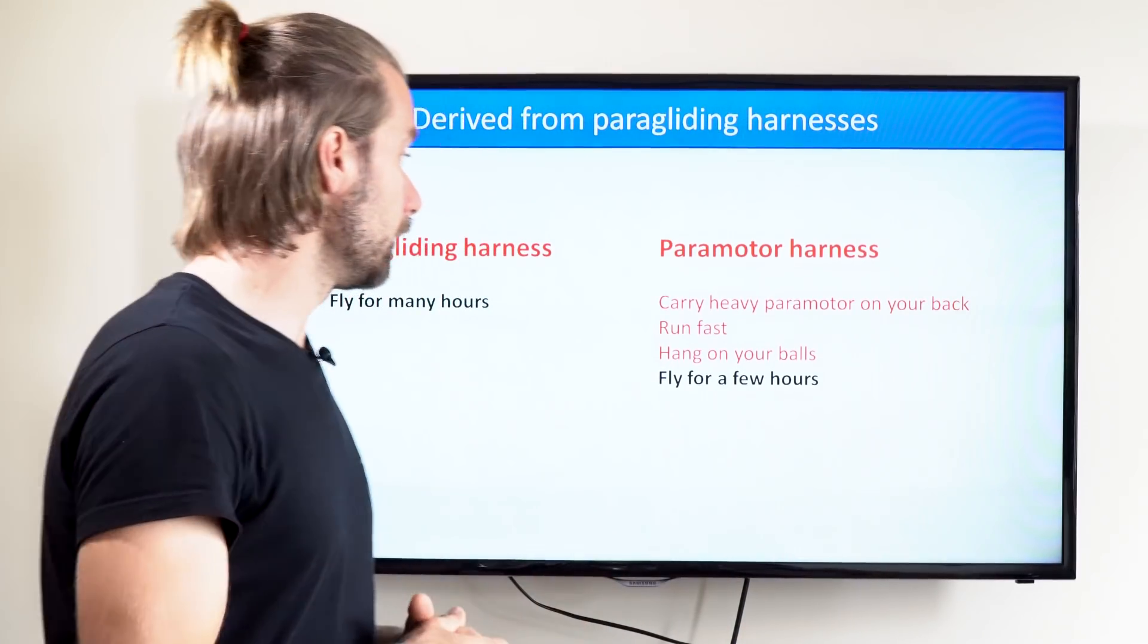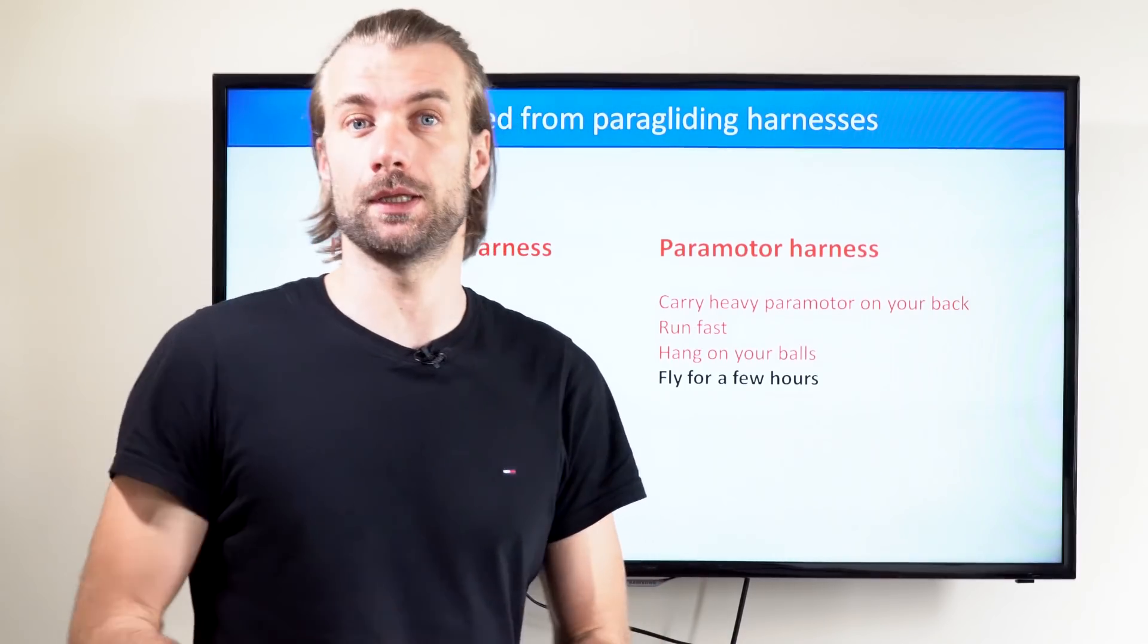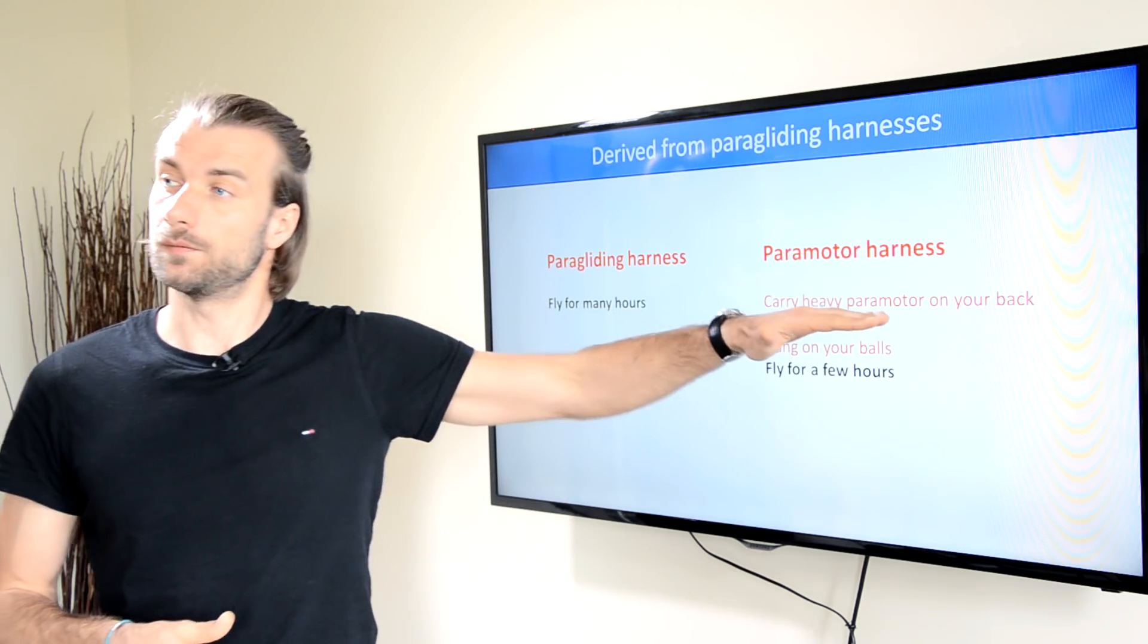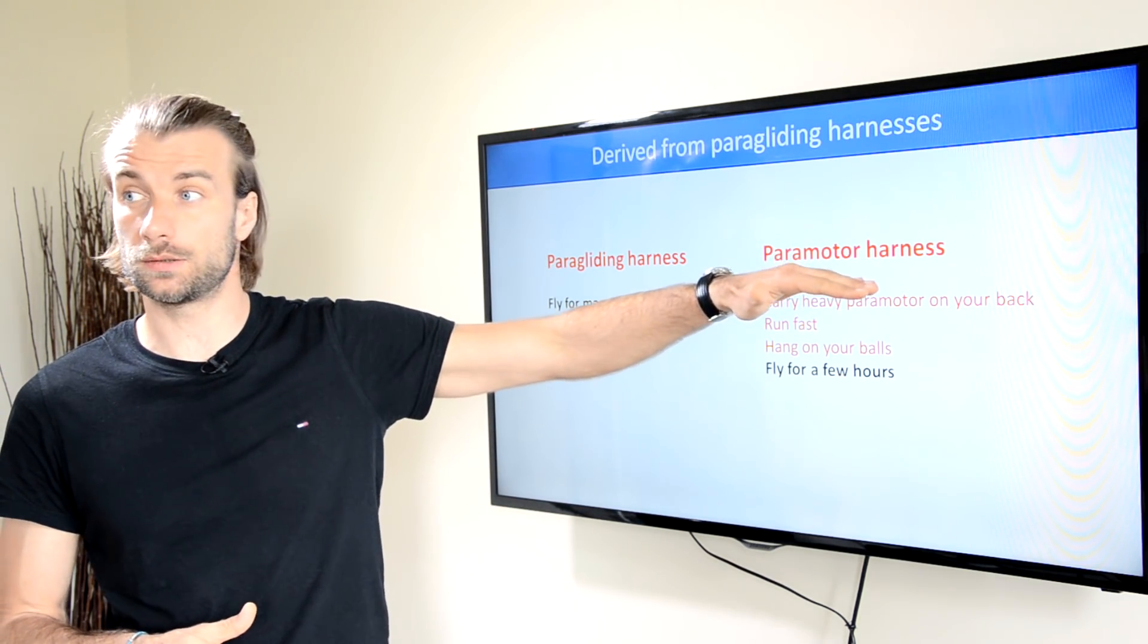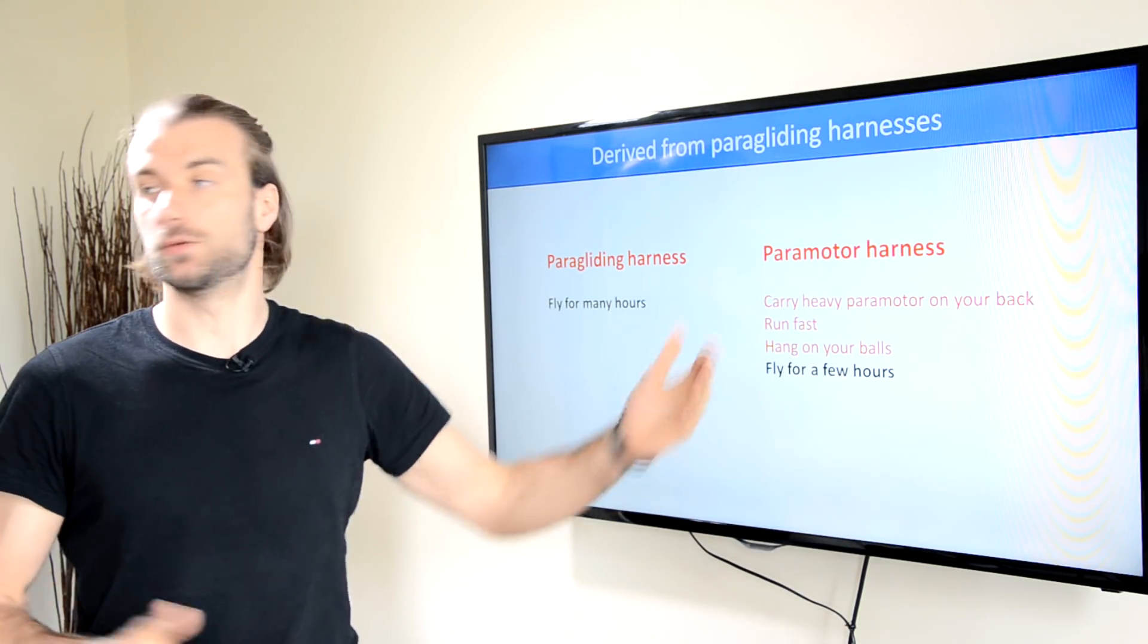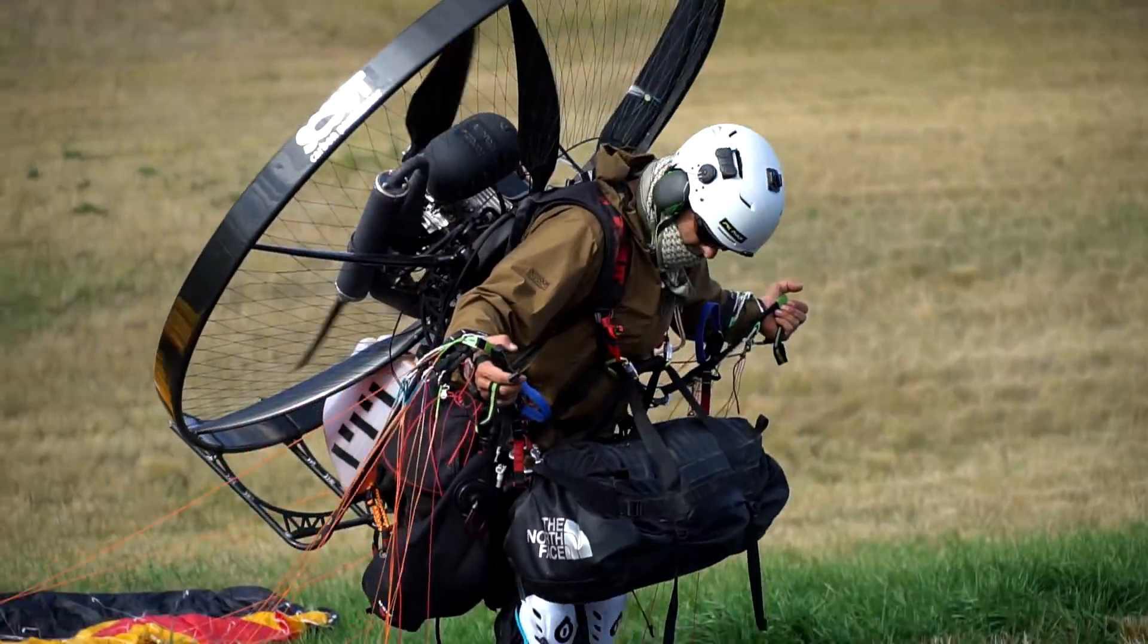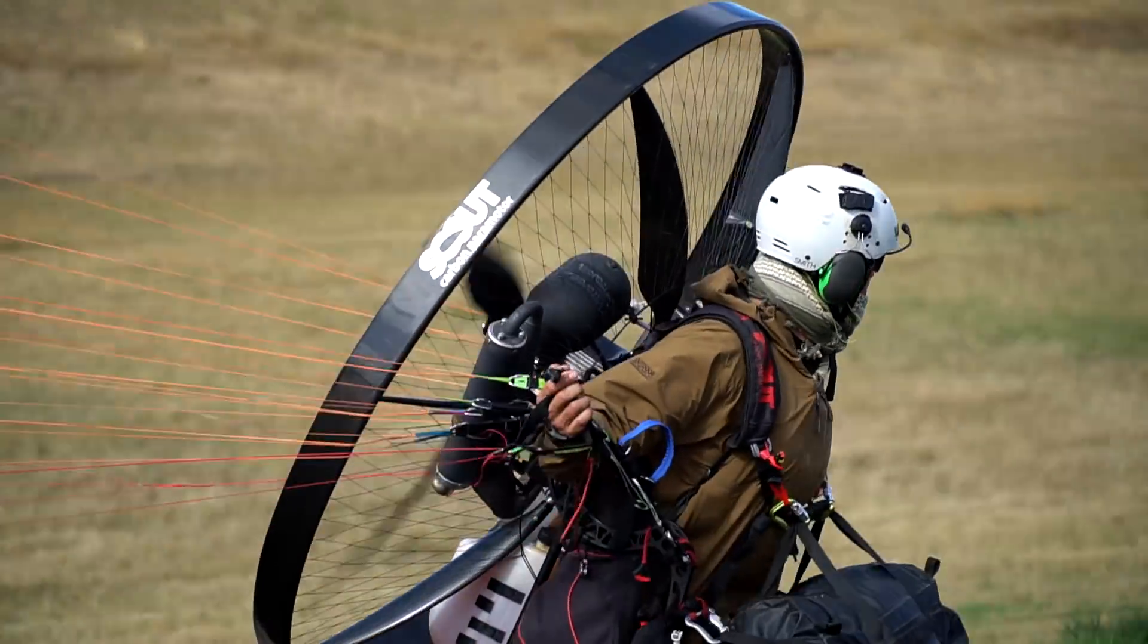And we hang in our harness after takeoff, before landing, and when doing foot drags. Now all these are pretty irrelevant to paragliding harnesses because you don't carry it that much, you run a few steps off the hill, and you don't do foot drags. So there are huge differences between paragliding and paramotoring needs, yet the harness geometry stays pretty much the same. Let's have a look at these details.